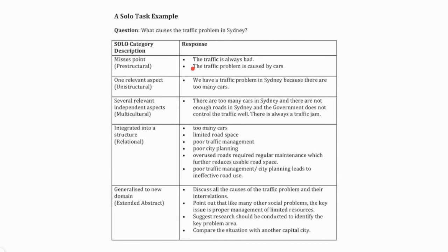Students begin to develop a higher level of thinking when they respond with something like: 'We have a traffic problem in Sydney because there are too many cars.' A more developed response — 'There are too many cars in Sydney and there are not enough roads, and the government does not control the traffic well, there is always a traffic jam' — shows that a student can recognize several relevant yet still independent aspects of a problem. Our goal as teachers is to push students to higher levels of the SOLO taxonomy by inviting relational thinking, where students can identify too many cars, limited road space, poor traffic management, poor city planning, and overused roads requiring regular maintenance — and see the connections between them.